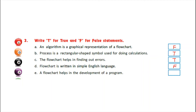E) A flowchart helps in the development of a program — Correct. So write T for true. With this, children, we have done true and false also.